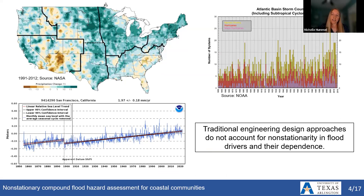In our engineering design and risk analysis, we have traditionally relied on observed historical data to inform our understanding of potential future conditions. However, we know now that this assumption is not adequate due to climate change, which is changing the frequency and magnitude of individual flood processes. We see changes in precipitation that can affect the likelihood and severity of fluvial and pluvial flood processes, and at the same time, along much of our global coastlines, we're seeing sea level rise, which is exacerbating the potential for coastal flooding.